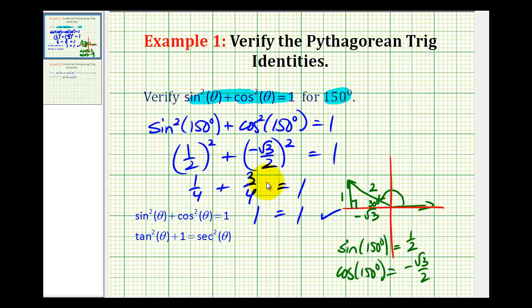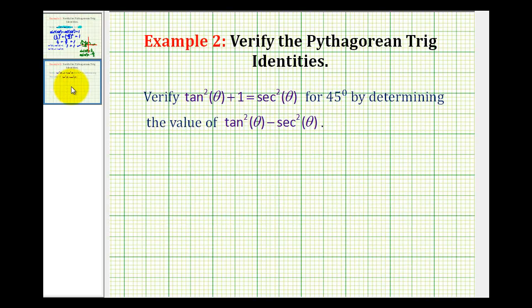Now this isn't a proof, this is just verifying that it's true for this specific angle. Let's take a look at a second example. Here we want to verify tan²(θ) + 1 = sec²(θ) for 45 degrees, by determining the value of tan²(θ) - sec²(θ).